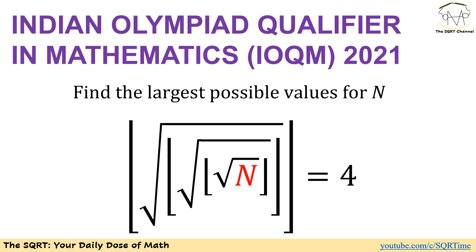Hello everyone, welcome to the sqrt channel. In this video we are going to take a problem from the Indian Olympiad Qualifier in Mathematics, or IOQM, from 2021. In this problem we have a set of floor functions and radicals applied to n: we first get the radical of n, apply the floor function, get the radical again, apply the floor function, apply the last radical, and finally get another floor function. We know the answer is going to be 4, and we are looking for the maximum possible value of n.